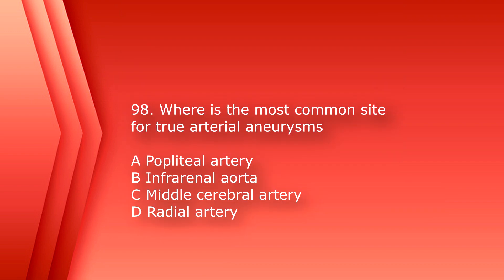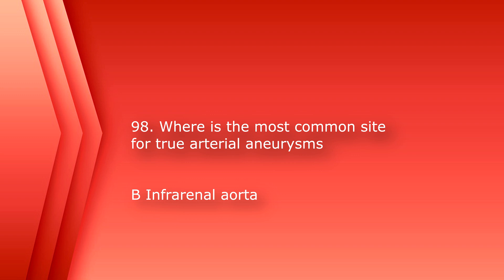Number 98: where is the most common site for true arterial aneurysms? A. Popliteal artery. B. Infrarenal aorta. C. Middle cerebral artery. Or D. Radial artery. The answer is B. Infrarenal aorta.